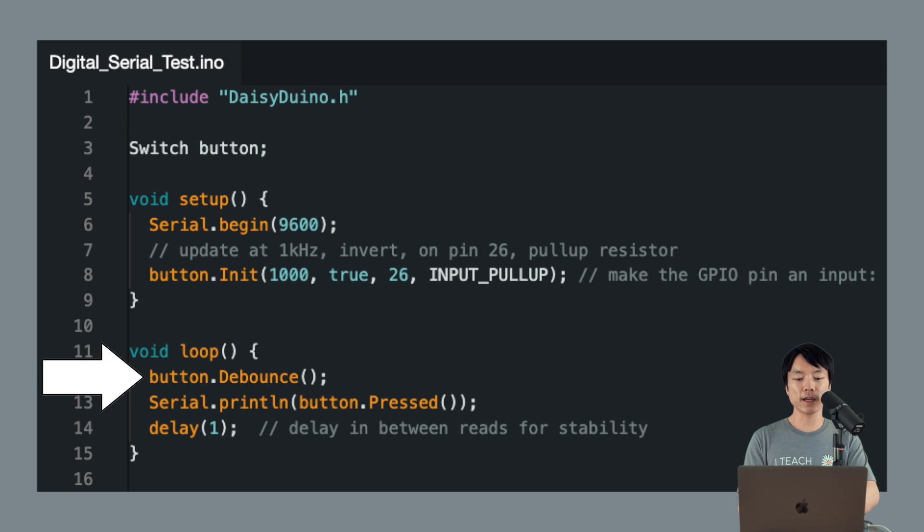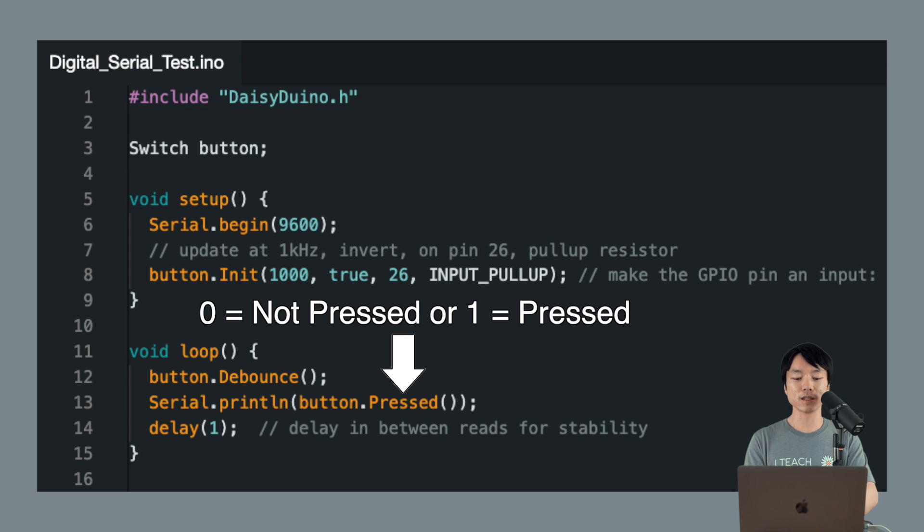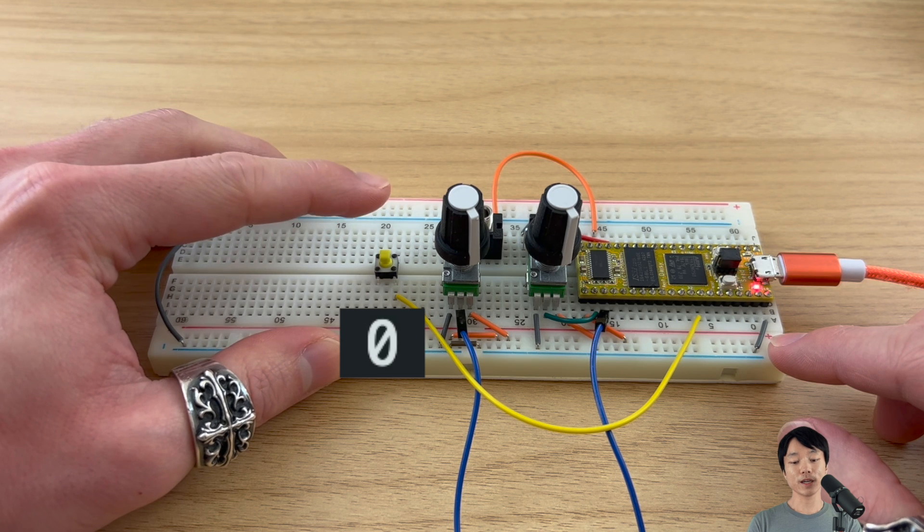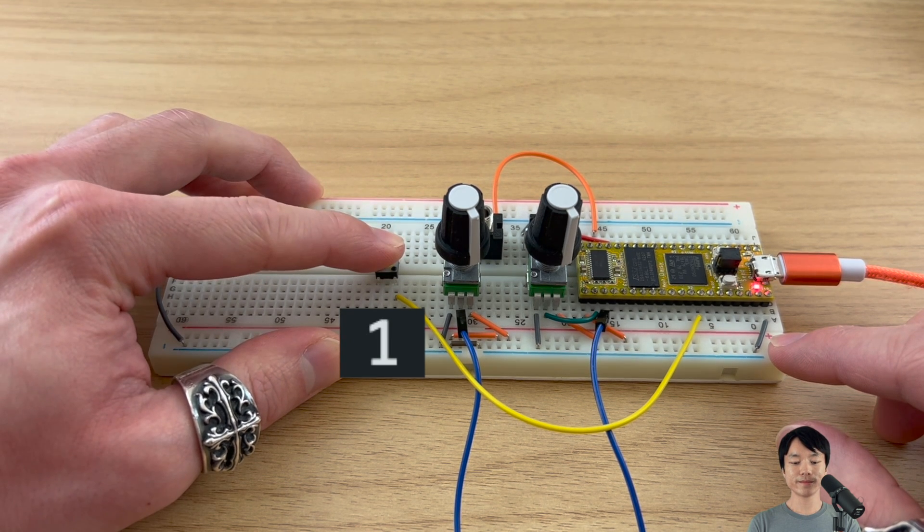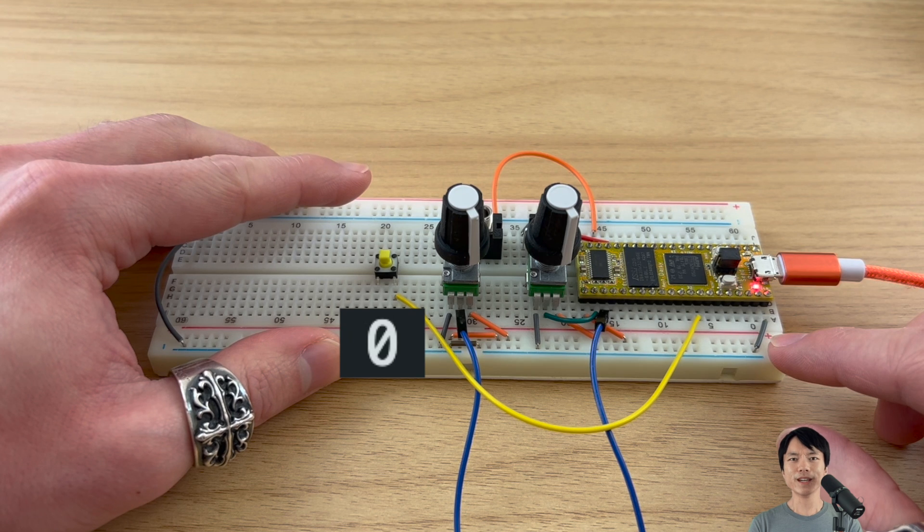In the void loop, we'll first add BUTTON DEBOUNCE, which will debounce and process the input of the button press. And finally, we print out the output of the function BUTTONPRESSED. The pressed function will either return 0 or 1, depending on the state of the button press. So when we press the button, it'll return a 1, and when we let go, it'll return a 0. Okay, let's flash and see if the button is working as expected. Nice!